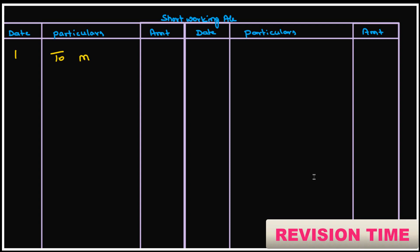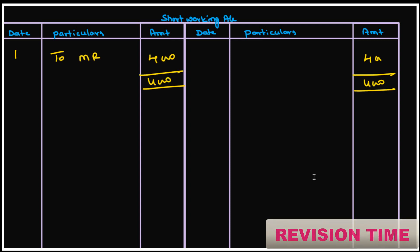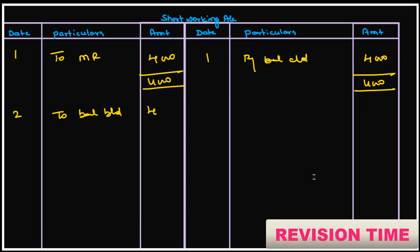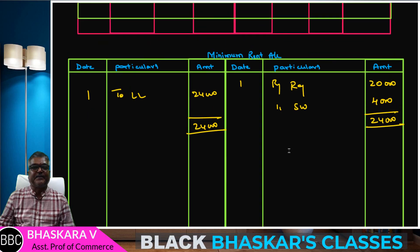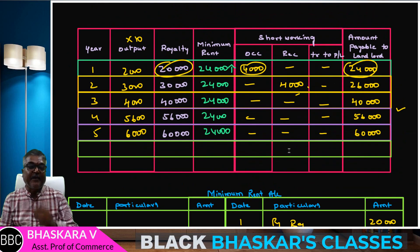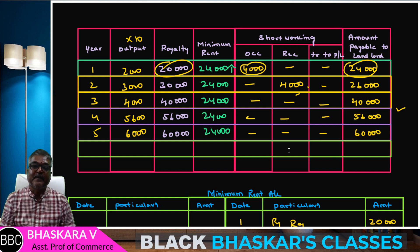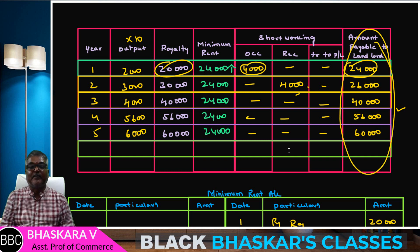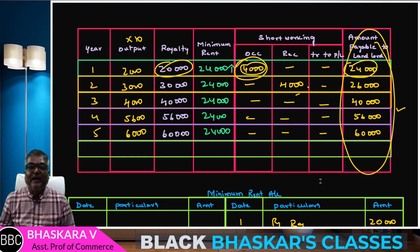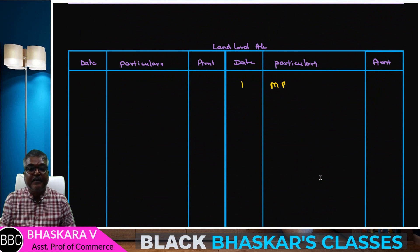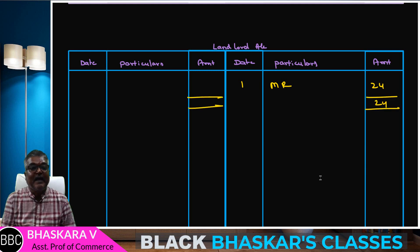This is the landlord account. If you have a royalty account and landlord account, the landlord account shows the amount payable to landlord column — minimum rent. The first year landlord account entry is recorded here.